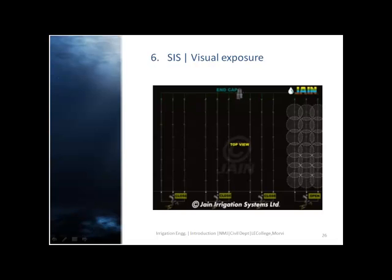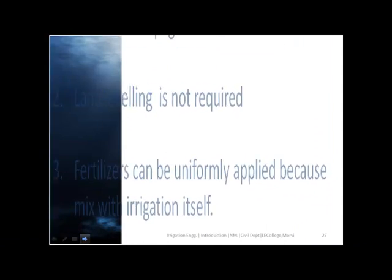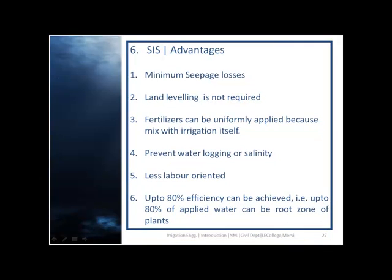Advantages of sprinkler irrigation system: minimum seepage losses, land leveling is not required, fertilizers can be uniformly applied because they are mixed with the irrigation water itself, it prevents waterlogging or salinity, it is less labor-oriented, and up to 80% efficiency can be achieved.